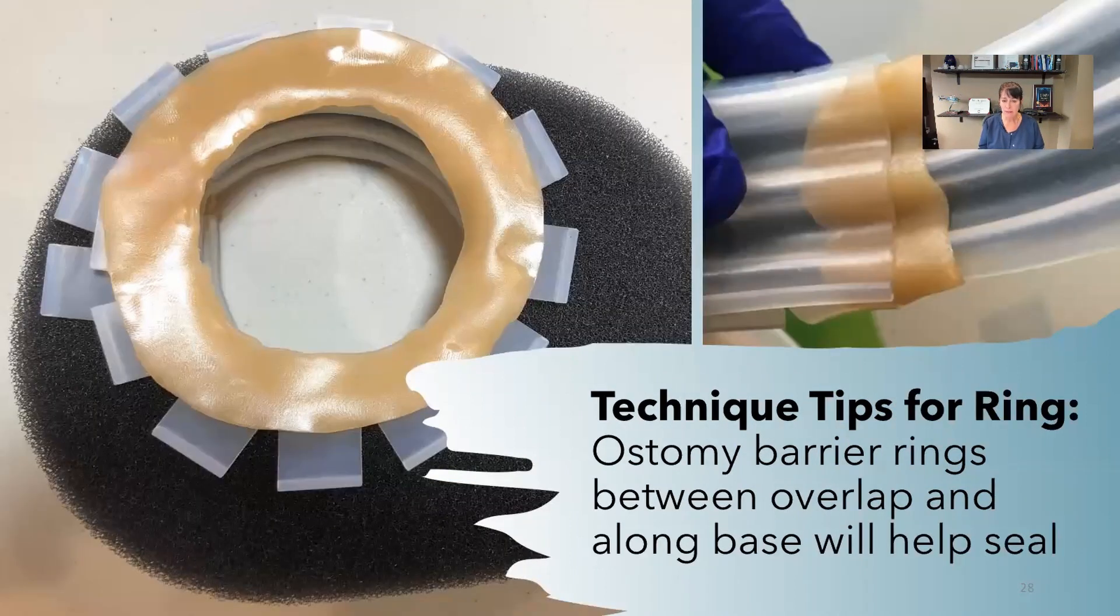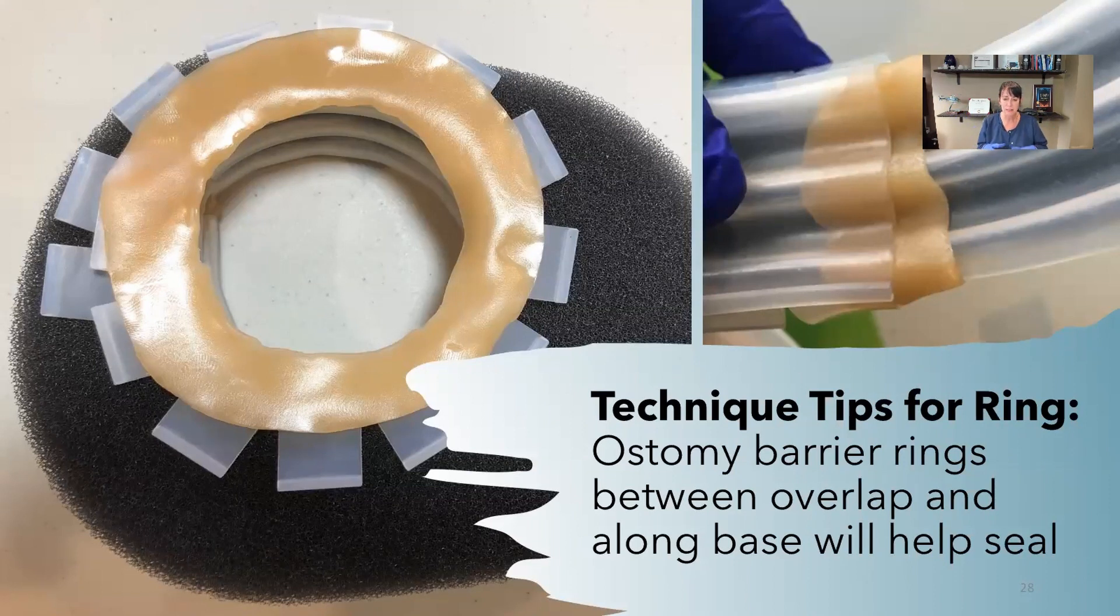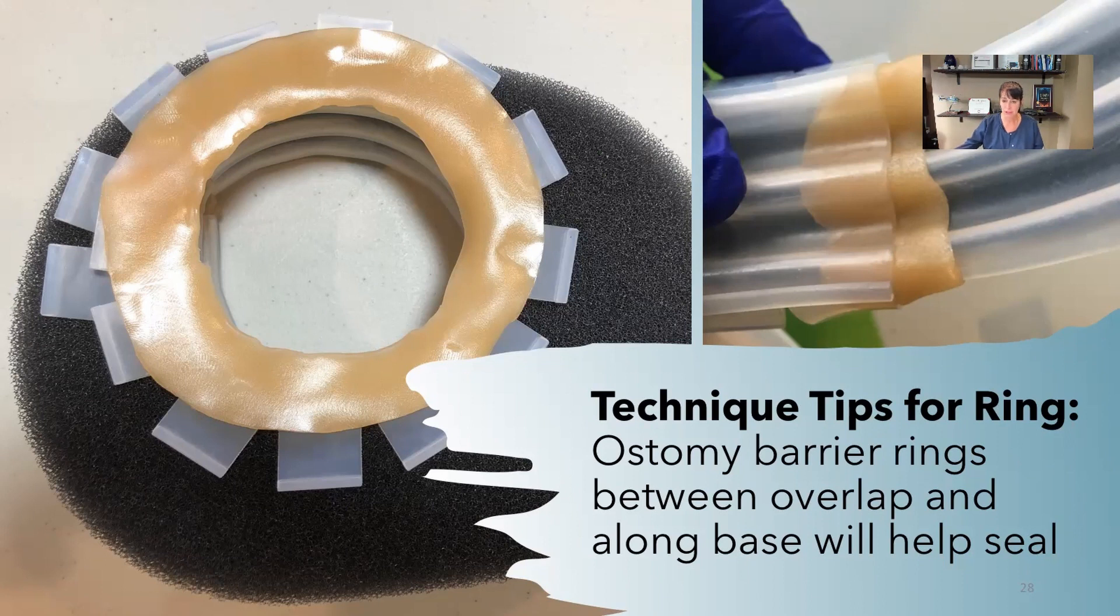The strip can also be a ring if there's a group like in the middle or on the side. We're going to go through the technique tips of how to make sure you get a seal.